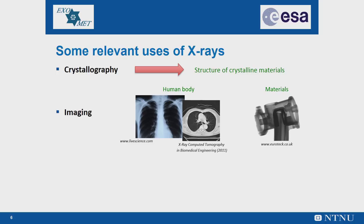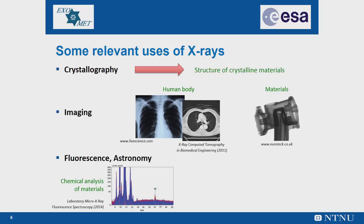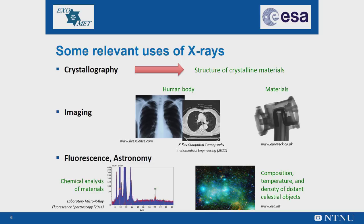In X-ray fluorescence, X-rays are generated within a specimen and detected. The outgoing energy of the X-ray can be used to identify the composition of the sample. Finally, in X-ray astronomy, important information such as composition, temperature and density of distant celestial objects are obtained from their X-ray emissions.